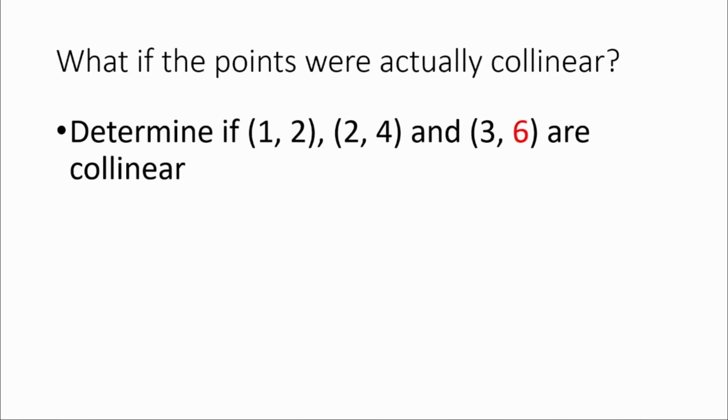If, however, we had a slightly different example. So we've got (3, 6). Instead of (3, 5), we could try the same test. So y equals 2x. We substitute in the values. Again, 2 times 3 is 6. So we get 6 equals 6, which makes perfect sense. Therefore, we can say it's collinear.